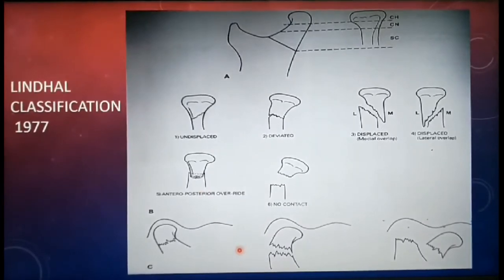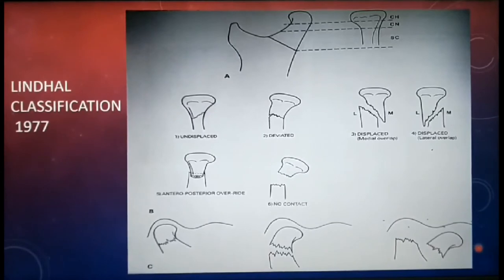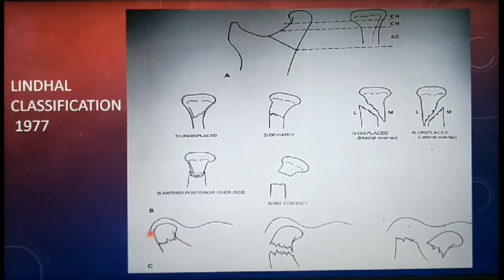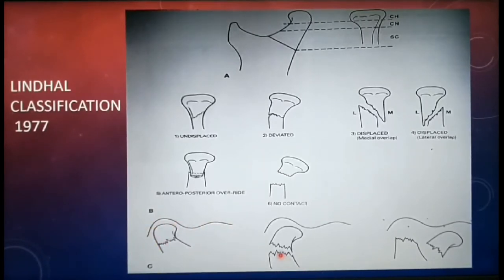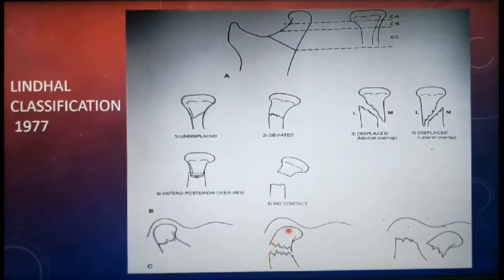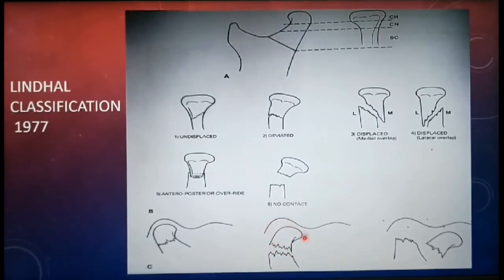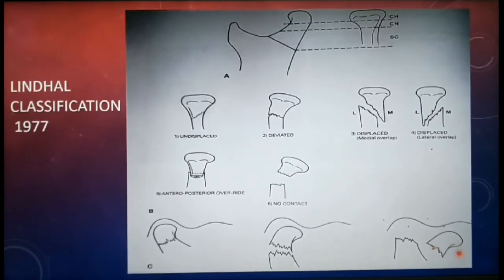Based on the relationship between the condylar head and the glenoid fossa, fractures are classified as non-displaced, displaced, and dislocated. In non-displaced fracture, the condylar head is in normal relation to the glenoid fossa. In displaced fractures, the condylar head remains within the confinement of the fossa but there is alteration in joint space. In dislocated fractures, the condylar head lies completely outside the fossa. The usual location of dislocation is anteromedial, due to the pull of the lateral pterygoid.